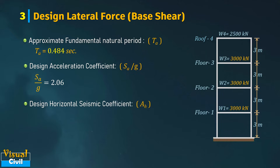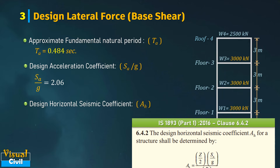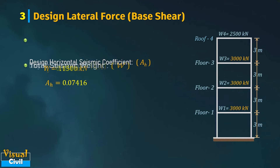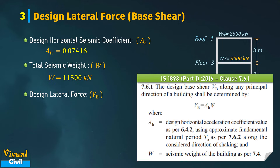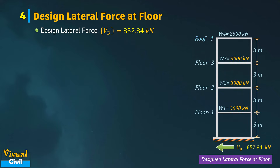Next, compute the design horizontal seismic coefficient Ah. This is determined using the expression specified in clause 6.4.2 of the IS code. After substituting all required values, Ah equals 0.07416. The design lateral force or base shear Vb along any direction of a building is determined using the expression in clause 7.6.1, where Ah is the design horizontal seismic coefficient and W is the total seismic weight. After putting in the required values and solving, Vb equals 852.84 kilo-newton.